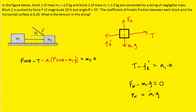We're going to make the same moves that we did before. We'll solve for the normal force, so that's going to be m1 times g. And then we'll substitute this back into the first equation, first replacing the kinetic frictional force with mu times normal force, and then multiplying by the normal force which we just figured out was m1 times g.